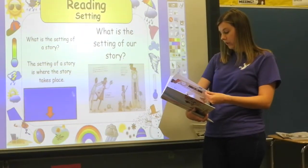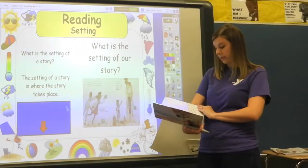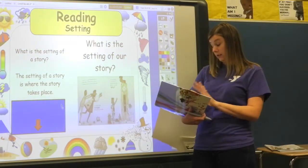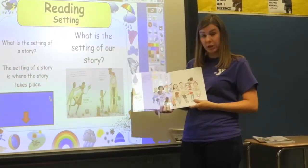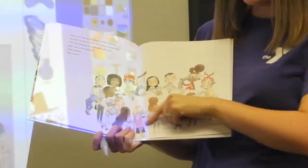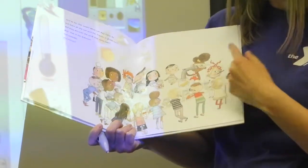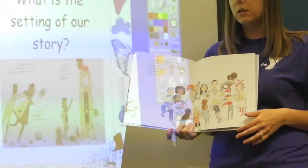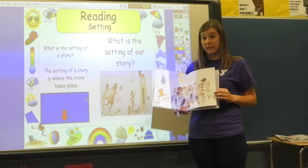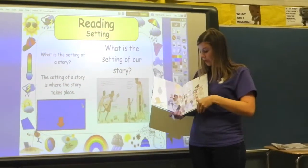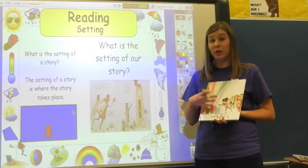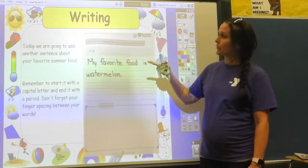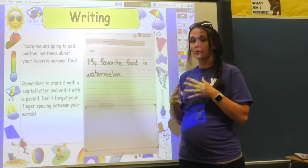Now later in the story, if you flip to the back, some parts show Ada Twist with lots of friends and they're usually working on some science stuff. Where do you usually work on things with a bunch of friends? At school, right! So some of the story takes place at school. Sometimes stories have more than one setting — this one takes place at her home and at school. Great job!